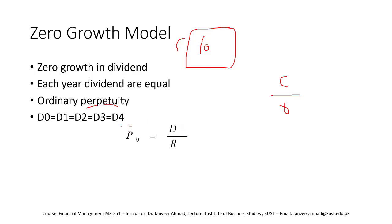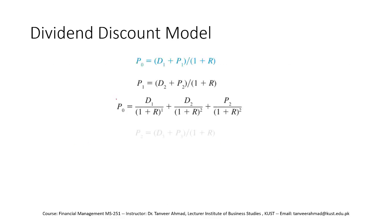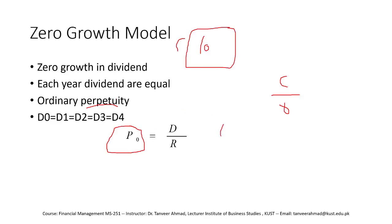In the zero growth model it is simply an ordinary perpetuity. The formula for intrinsic value is P₀ equals the dividend divided by the required rate of return (cost of capital). P₀ stands for the price of the stock today, at time zero. From our previous example where the required rate of return was 25 percent, the current price should be 10 divided by 0.25, giving an answer of 40.